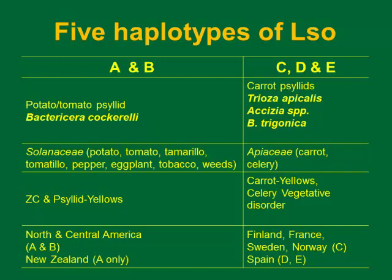Rebecca mentioned that there are five haplotypes that have been described. Those are A and B, associated with the zebra chip, and so far the diseases reported are associated with those two haplotypes. In central North America, we have both haplotypes. In New Zealand, they only have haplotype A. Just quickly going through the other three types — they're all in European countries right now. Hopefully we won't get them, but maybe they're here.